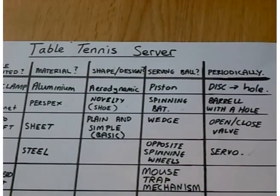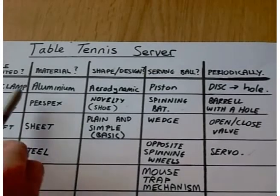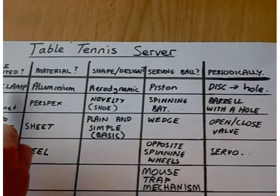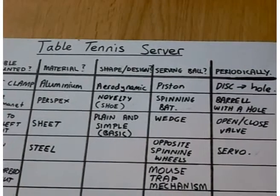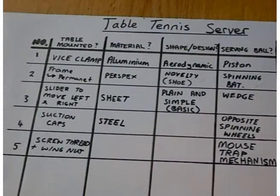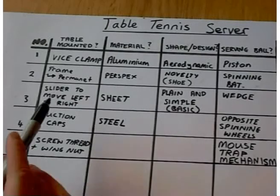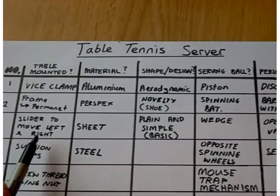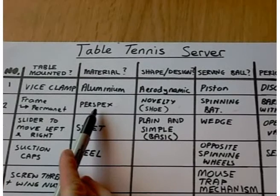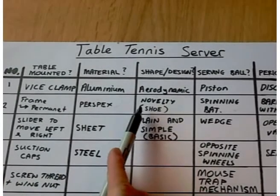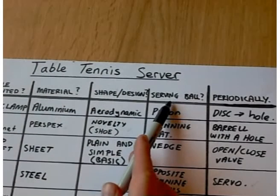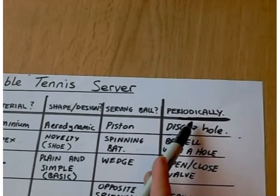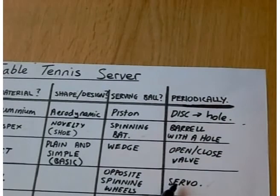Now, how do we go about finding solutions from this? Well, make random runs like so, selecting different solutions to form one final solution. By this I mean, under Table Mounted, randomly select number 3 — a slider to move left and right. For Material, maybe Perspex. Shape Design, I might choose a Novelty Shoe Design. Serving the ball, a spinning bat mechanism. And Periodically, randomly select a servo mechanism.